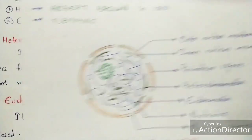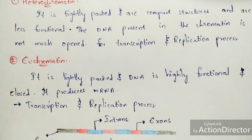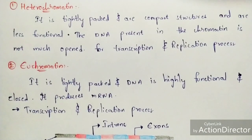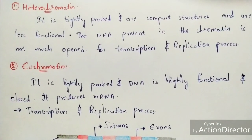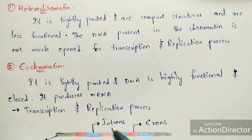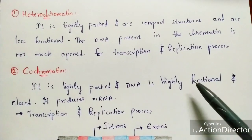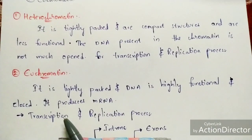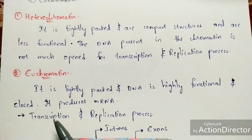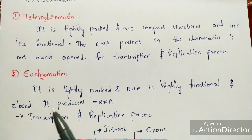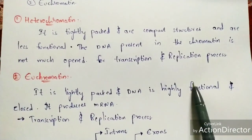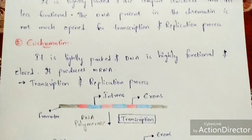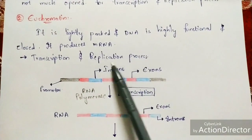Euchromatin is quite opposite to heterochromatin. It is lightly packed, and the DNA is highly functional. It produces mRNA and exhibits transcription and replication processes. Replication is where the mother DNA forms its daughter individuals. Transcription is the process that mainly helps in the production of mRNA.